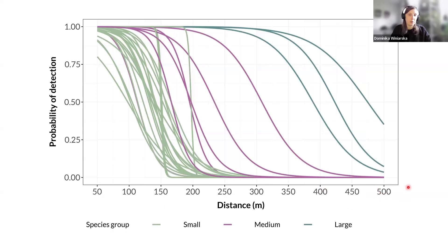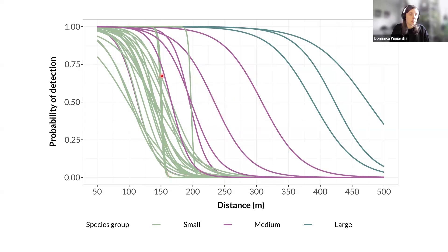Here is the figure for all species together. Here is the probability of detection for the common cuckoo, here are two pigeons — species that were detected further away. Here is the black woodpecker, also quite a loud species detected up to 350 meters. And here is the coal tit. Some species had a very rapid drop in detectability — this is because they had a very straight cut at certain distances, like they were never detected beyond a threshold — that is the reason for those almost straight lines.